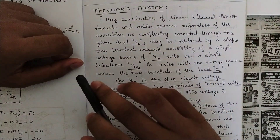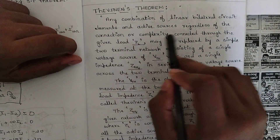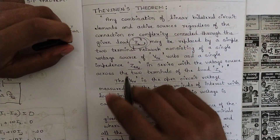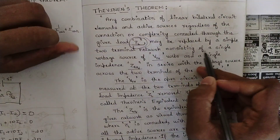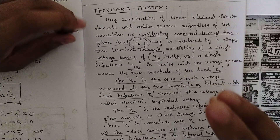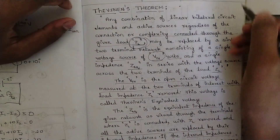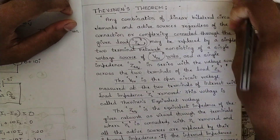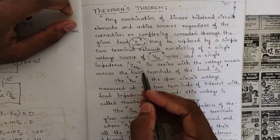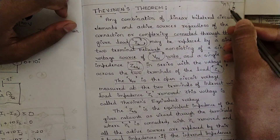Let's start with the statement: any combination of linear bilateral circuit elements — that is resistors and all — connected in loops or lumps, and active sources regardless of connection or complexity, connected through a given load Z_del, may be replaced by a simple two-terminal network. This network consists of a single voltage source of V_th volts. In the circuit we have one load impedance; that branch should be removed and in its place we name one V_th voltage, called the Thevenin voltage.